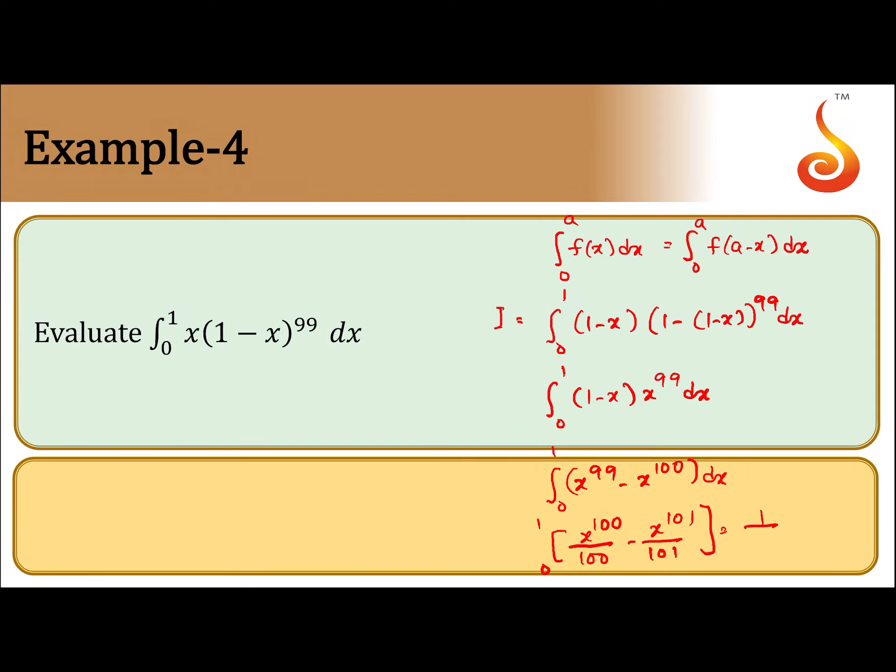The resultant will give you 1 by 100 minus 1 by 101. This final result will be 1 by 10100. So I value will get it as 1 by 10100.